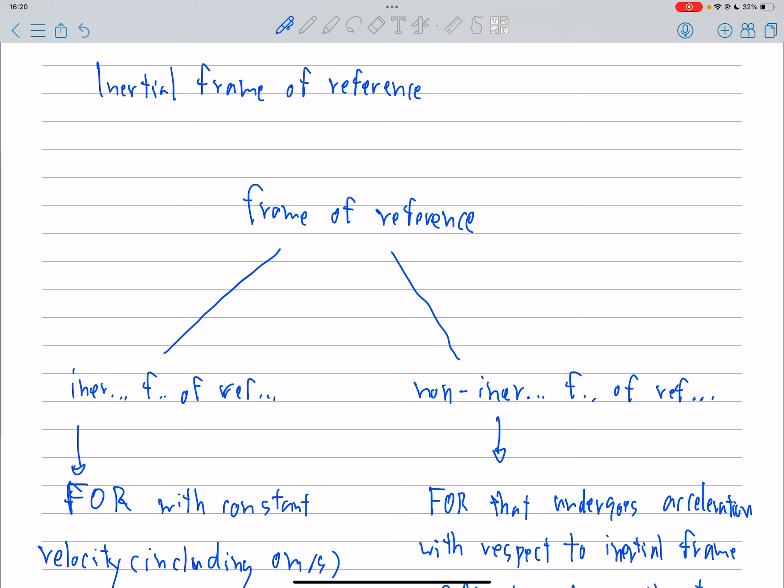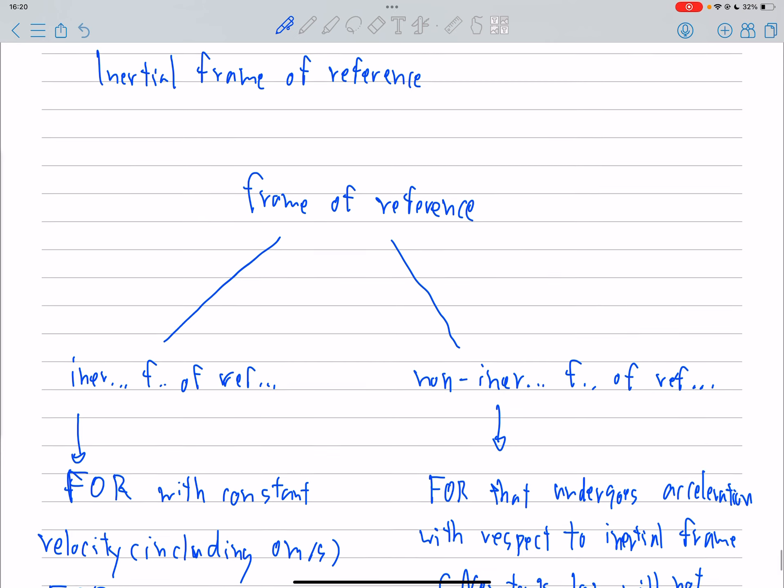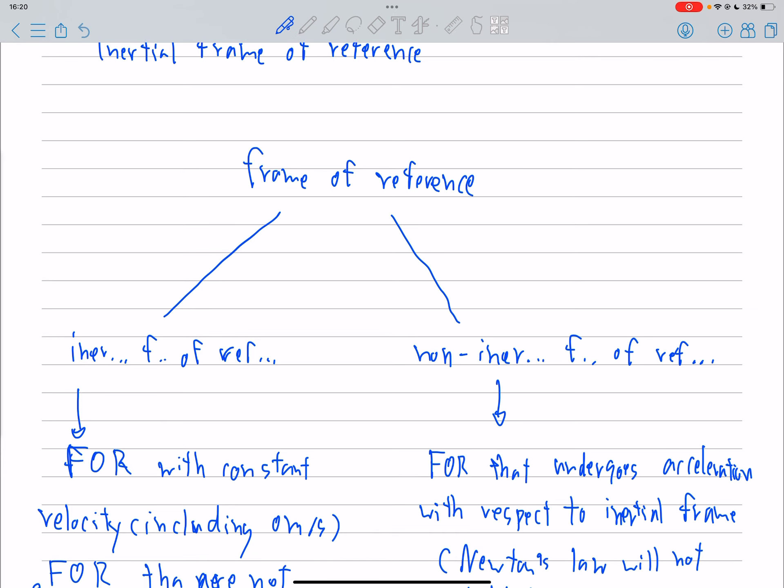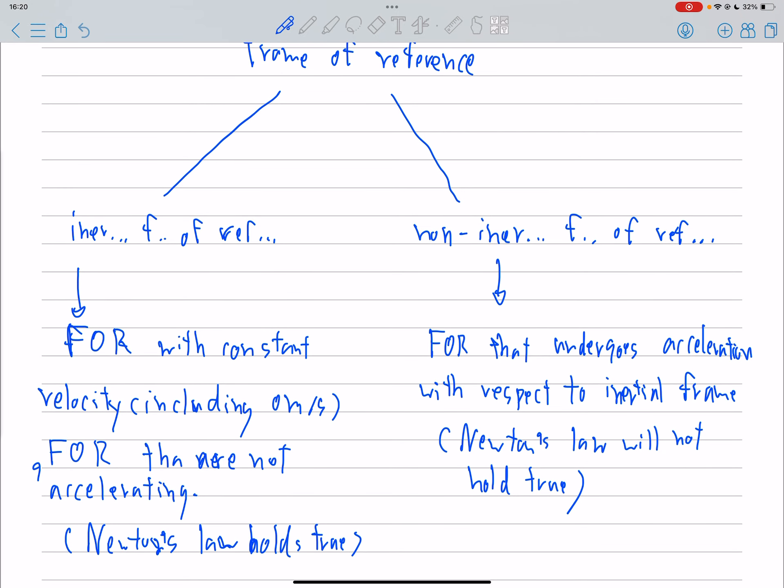Inertial frame of reference has constant velocity. That means standing still is also an inertial frame of reference.